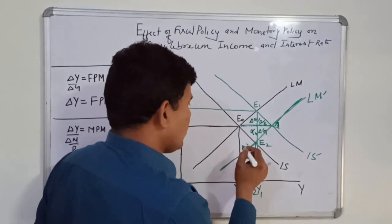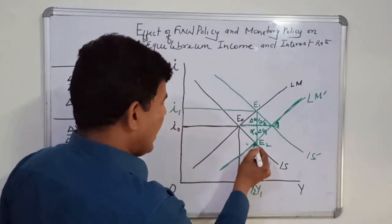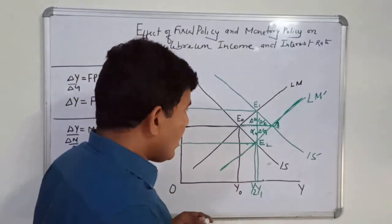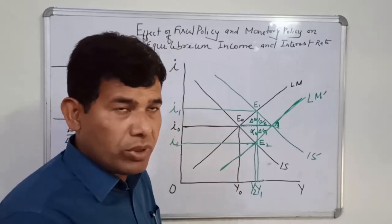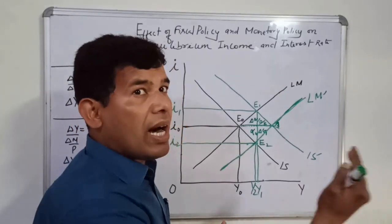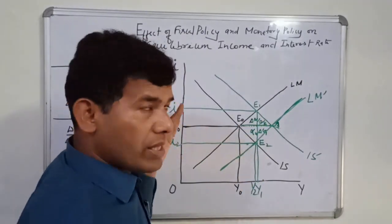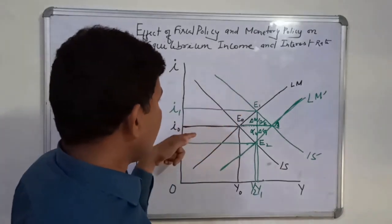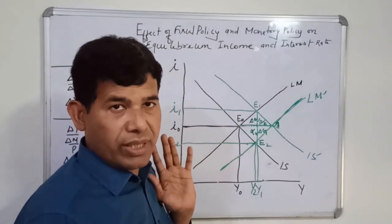We end up with Y2 level of income and I2 level of interest rate. So in the IS-LM model, it is not only fiscal policy which can influence the level of output, but also monetary policy. If expansionary monetary policy is followed, it leads to a higher level of GDP. If contractionary monetary policy is followed, the LM curve will shift leftward, leading to a lower level of income and higher level of interest rate.